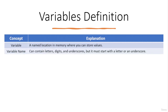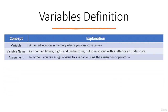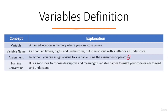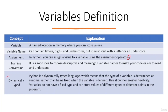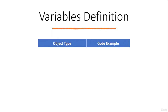A variable name can contain letters, digits, and underscores, but it must start with a letter or underscore, not a number. In Python, you assign a value to a variable using the assignment operator. It is a good idea to choose descriptive and meaningful variable names to make your code easier to read and understand. Python is a dynamically typed language, which means the type of a variable is determined at runtime rather than being fixed when the variable is defined, allowing for greater flexibility.